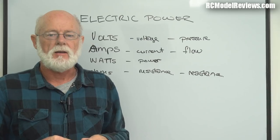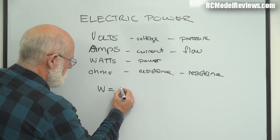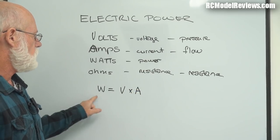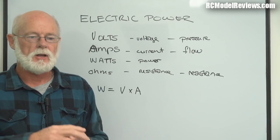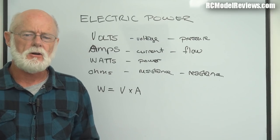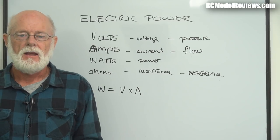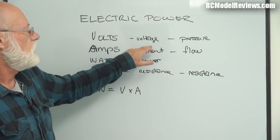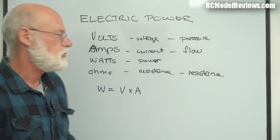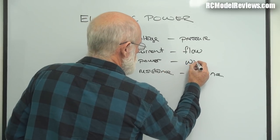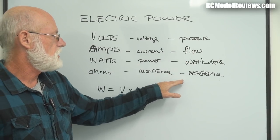There's another quantity here - watts. Watts is power, and power is a combination of voltage and current. The formula is: watts equals volts times amps. We measure power in our models in watts - a small model might have 30 to 50 watts, while a big hotliner or EDF can have kilowatts. But no matter how much power, it's always voltage times current.